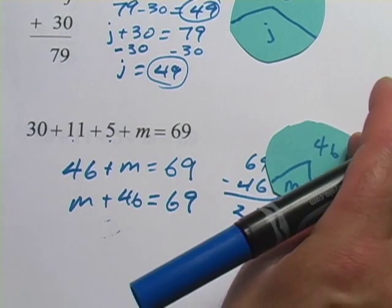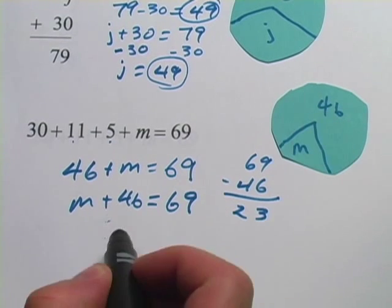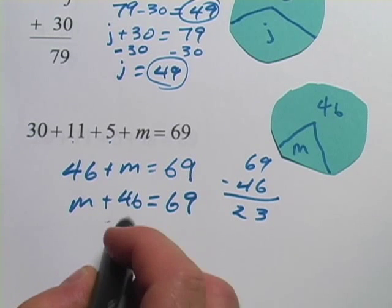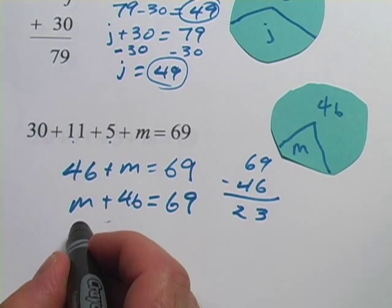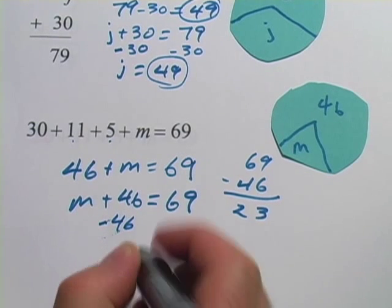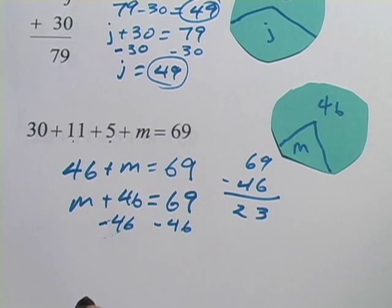If we want to do this the algebra way, we say, what do I need to undo on this side? Well, we have a plus 46, to undo it and get that variable, that letter all alone, we would do a minus 46, but we have to do it to both sides, the equal sign.